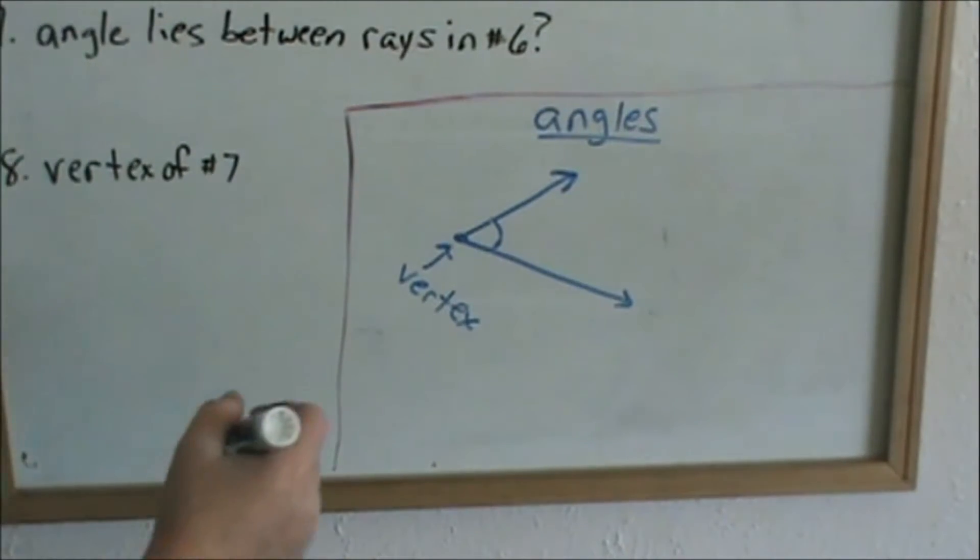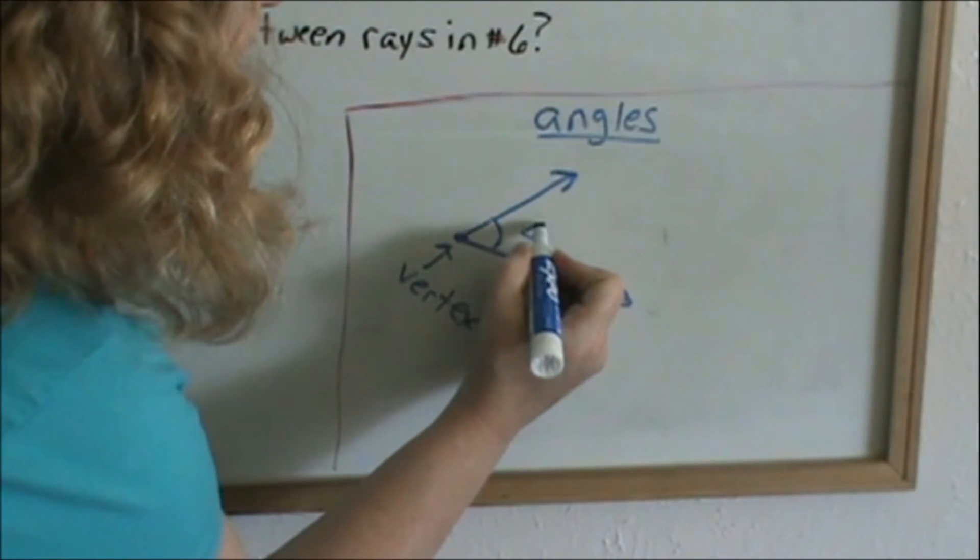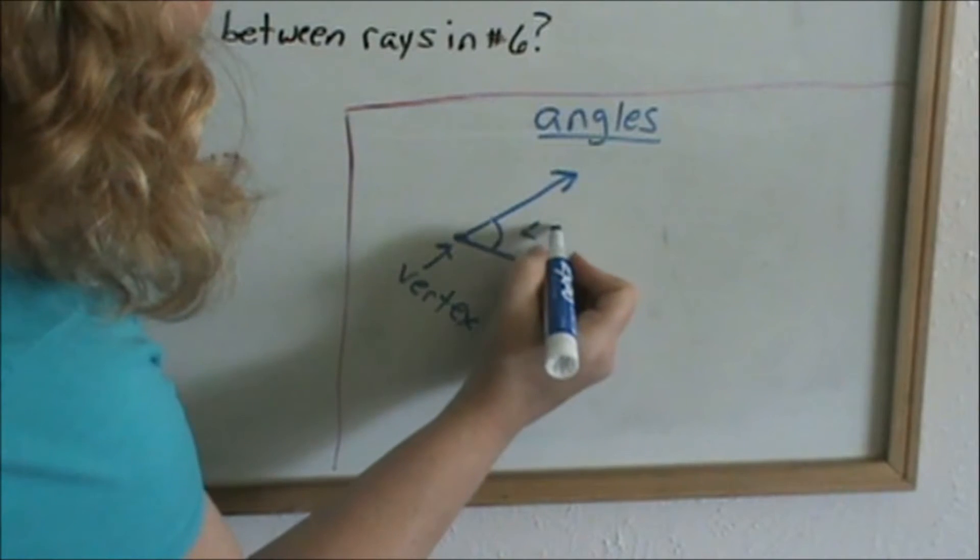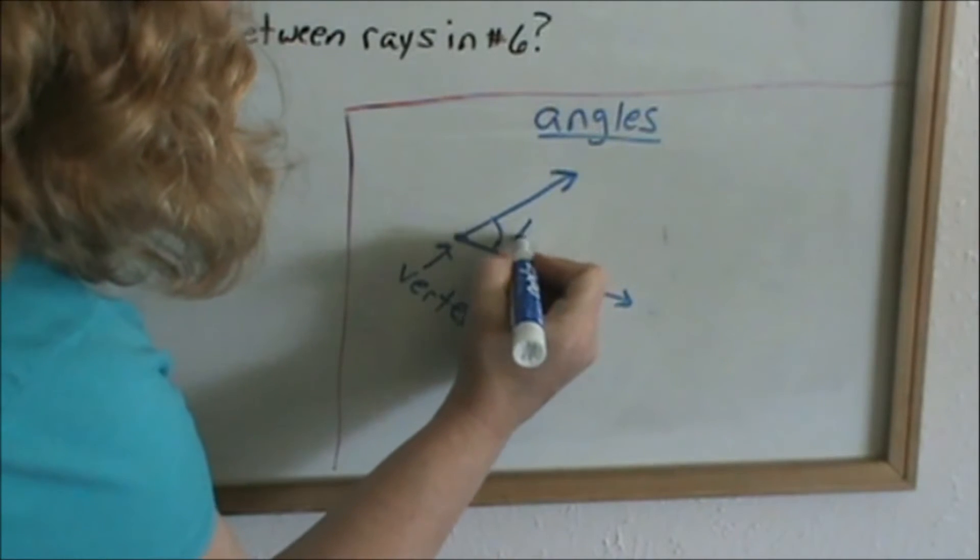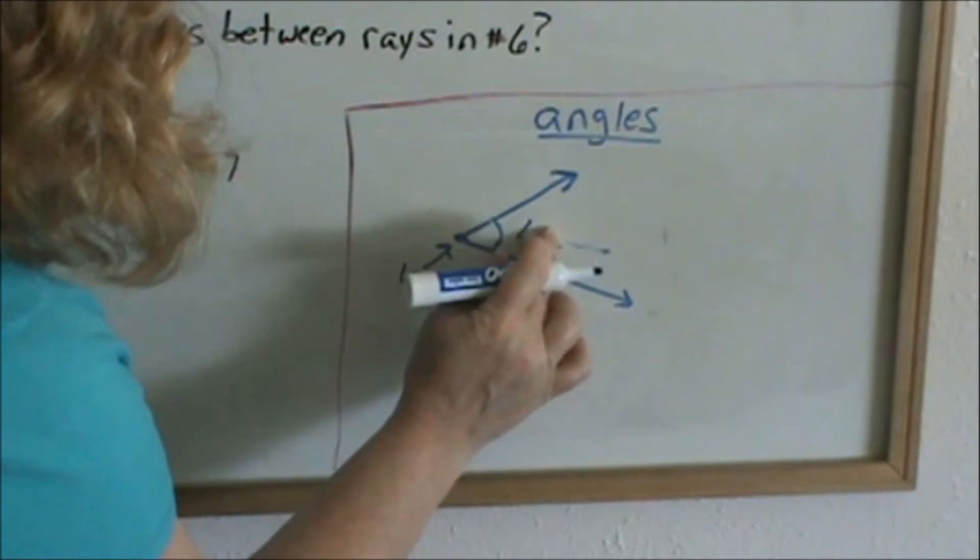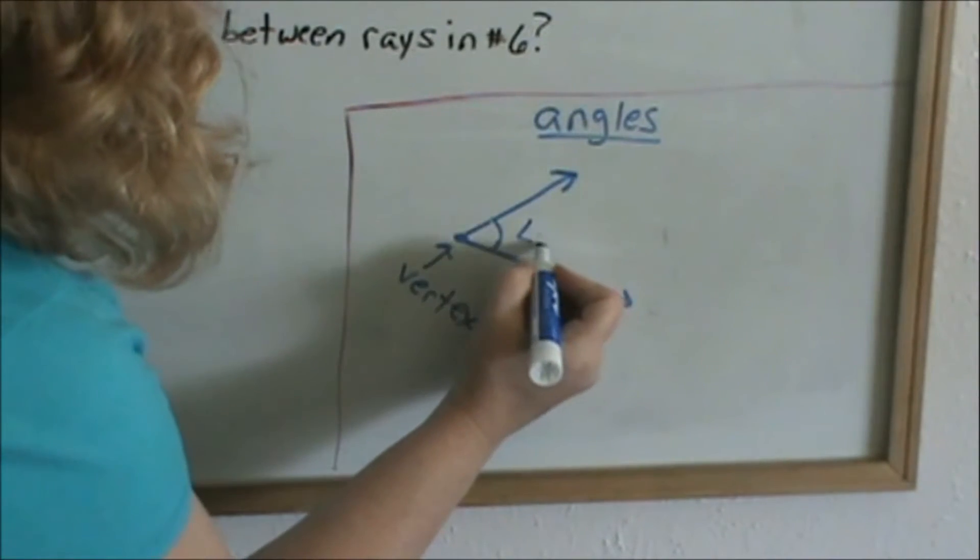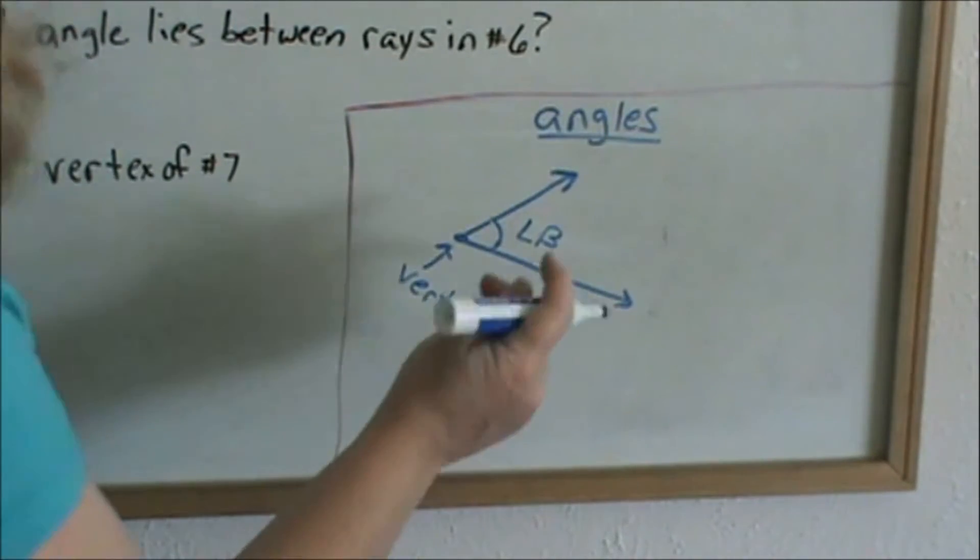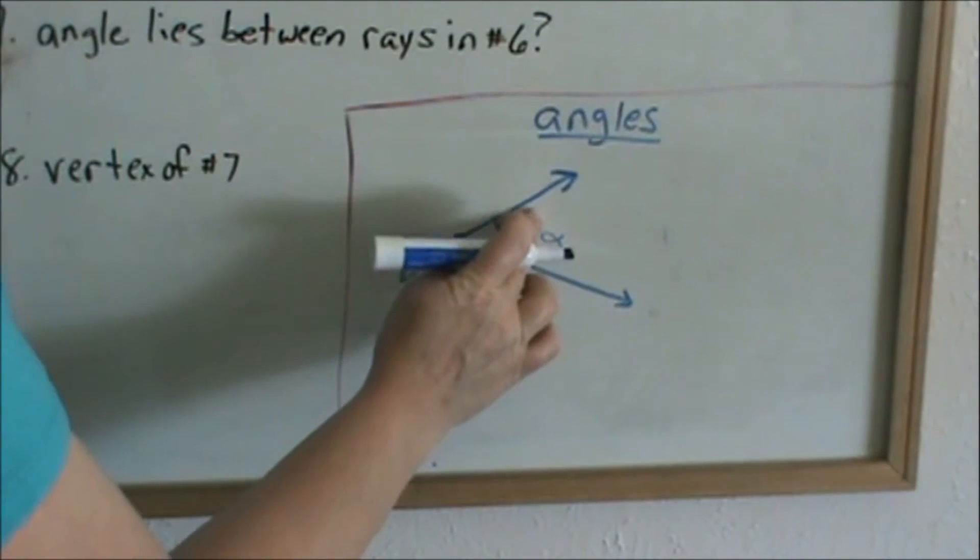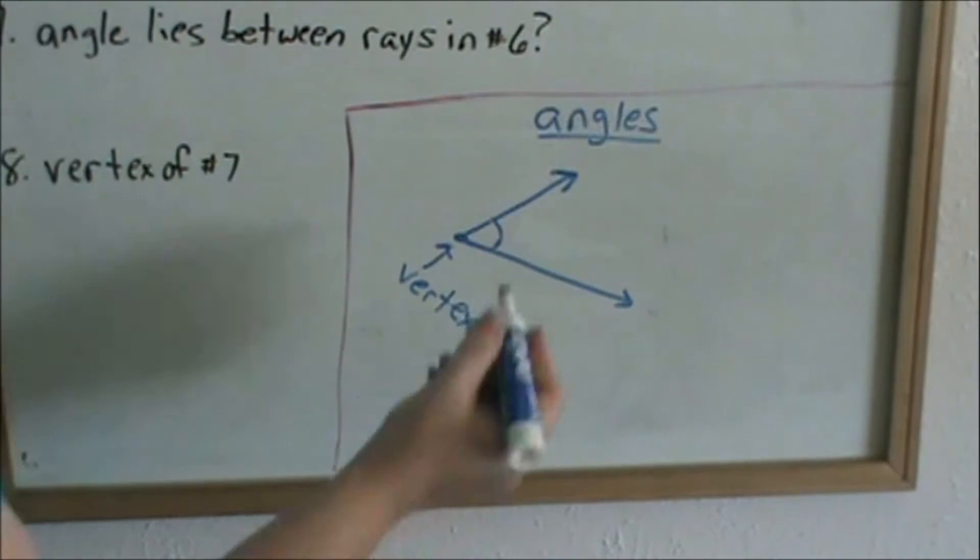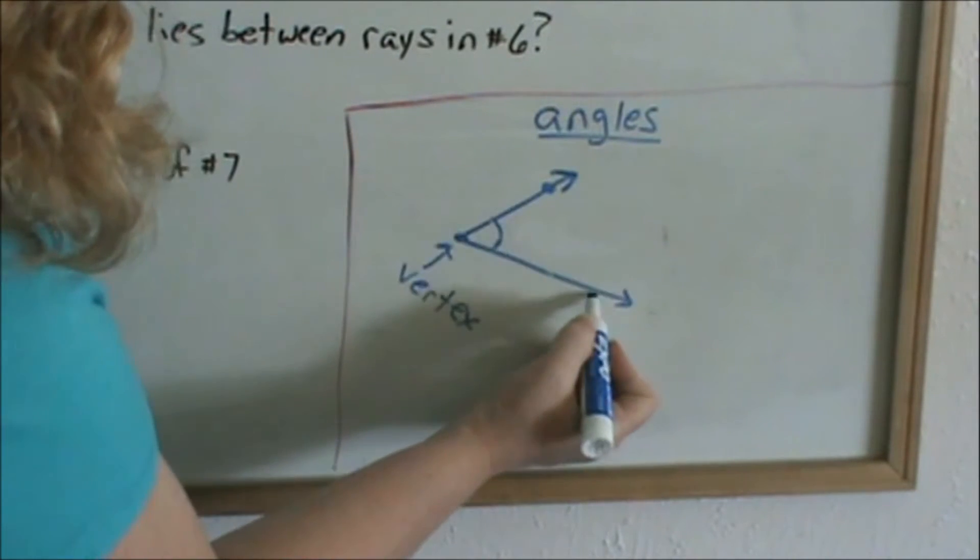And then there's different ways we can name angles. This angle can be named angle, and this is our angle symbol right there, angle one. We can call this angle one, or we can call it with a Greek letter, angle alpha, or you can call it with a Greek letter beta. Generally in geometry, you're going to see angles with letters.